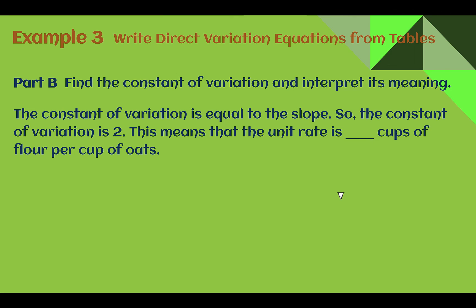What is the constant of variation and what does it mean? The constant of variation was our slope, which was 2. This means that the unit rate is 2 cups of flour for every 1 cup of oats. Or we can say that in this cookie recipe, there's twice as much flour as there are oats.